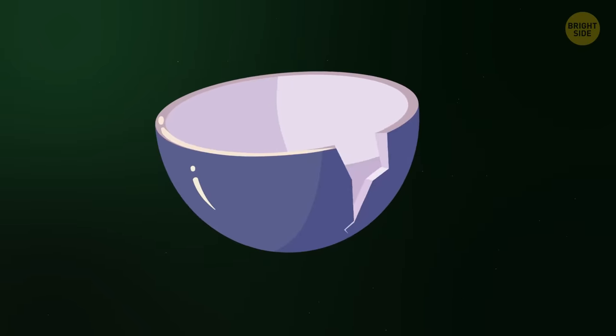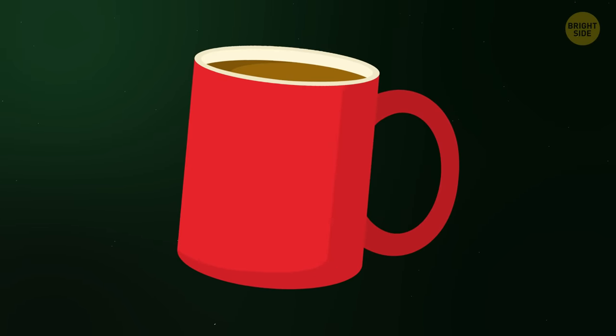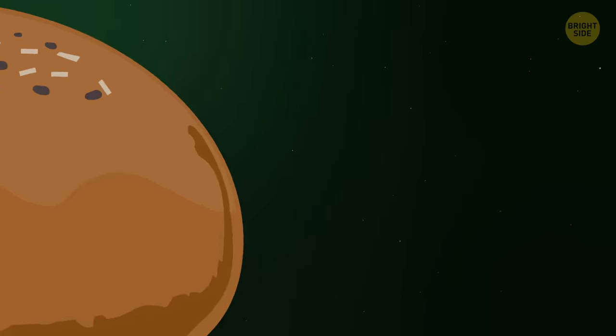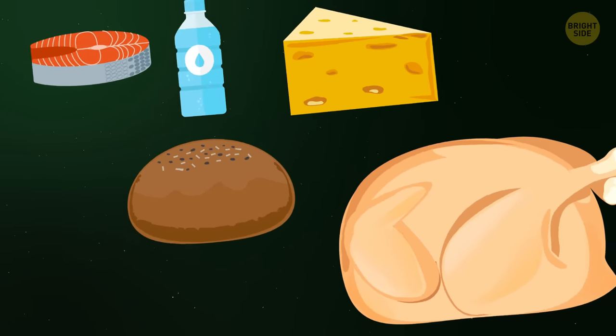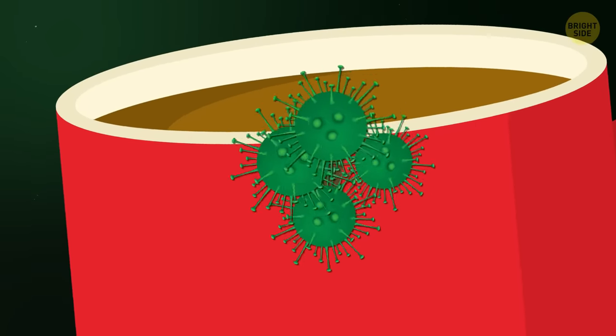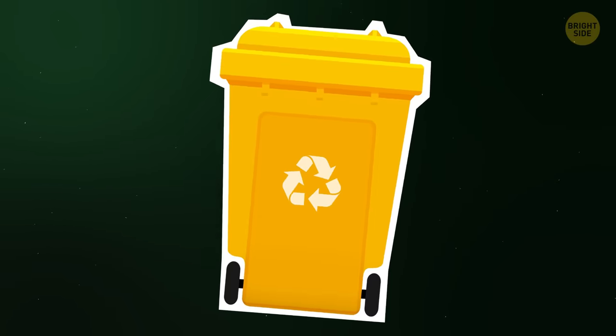Number 28: Damaged dinnerware. A chip on a coffee mug or a dinner plate doesn't seem problematic. But over time, the chip gets filled with food and water, making it a great source of bacterial growth. So don't hesitate to get rid of them.